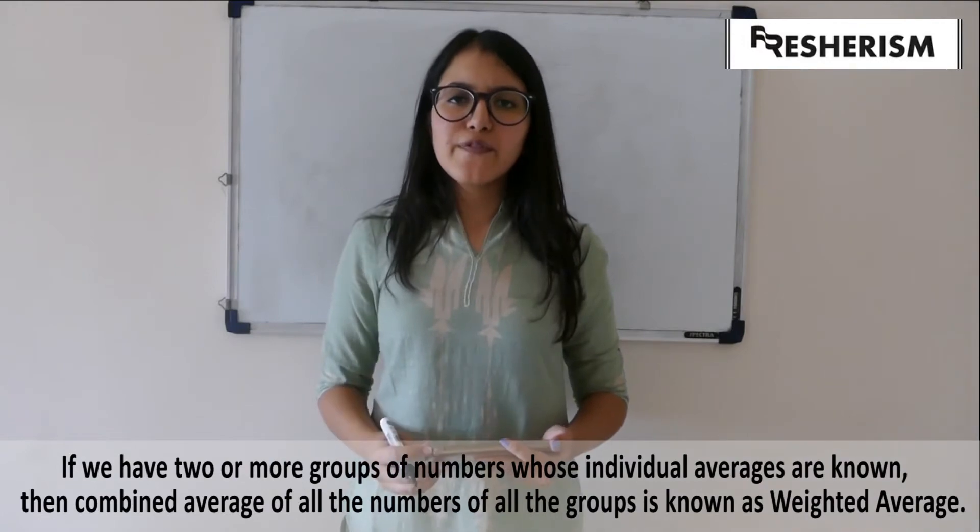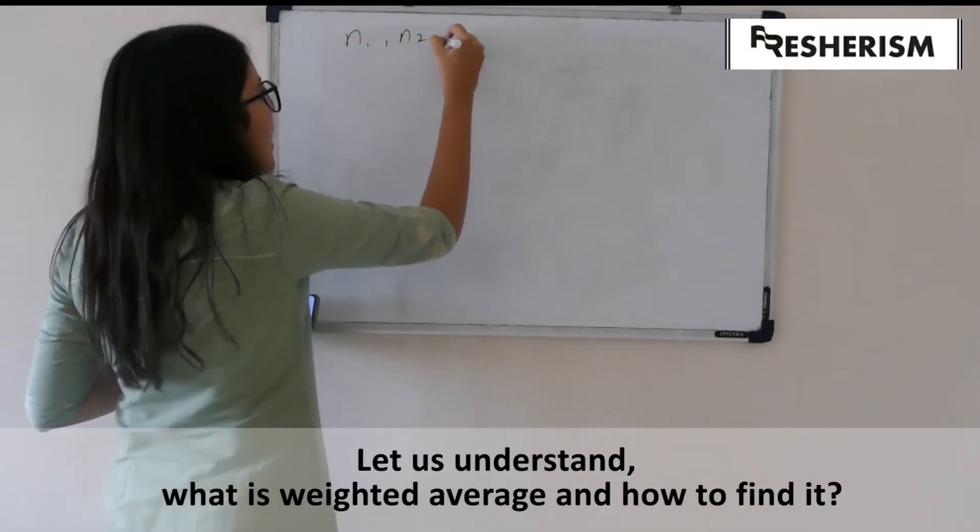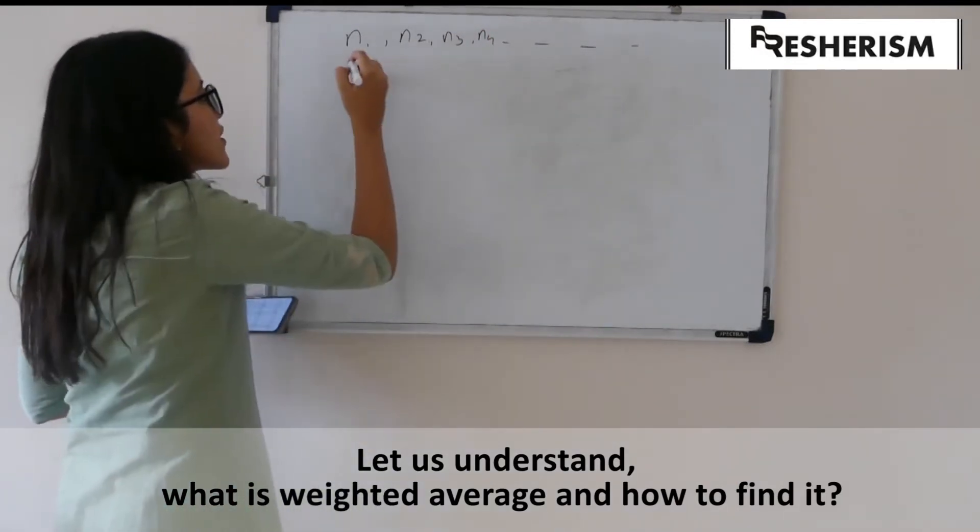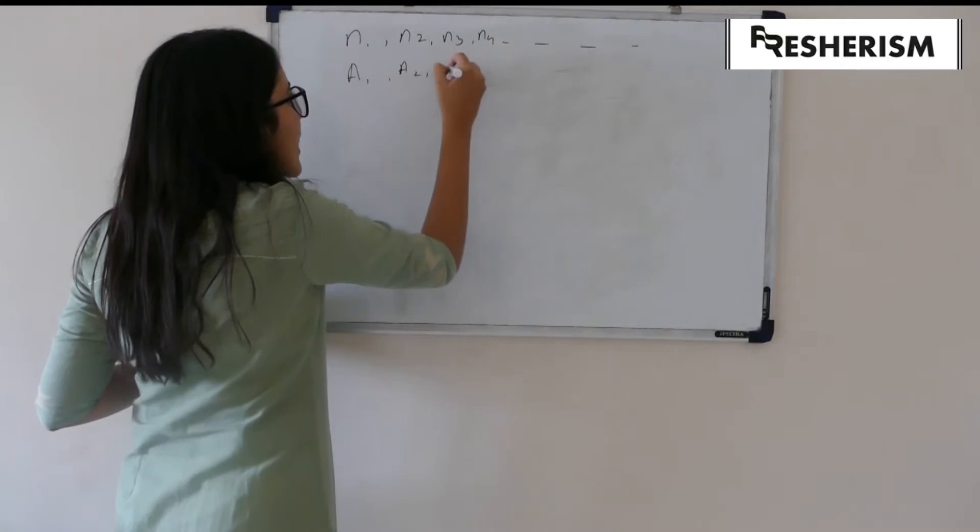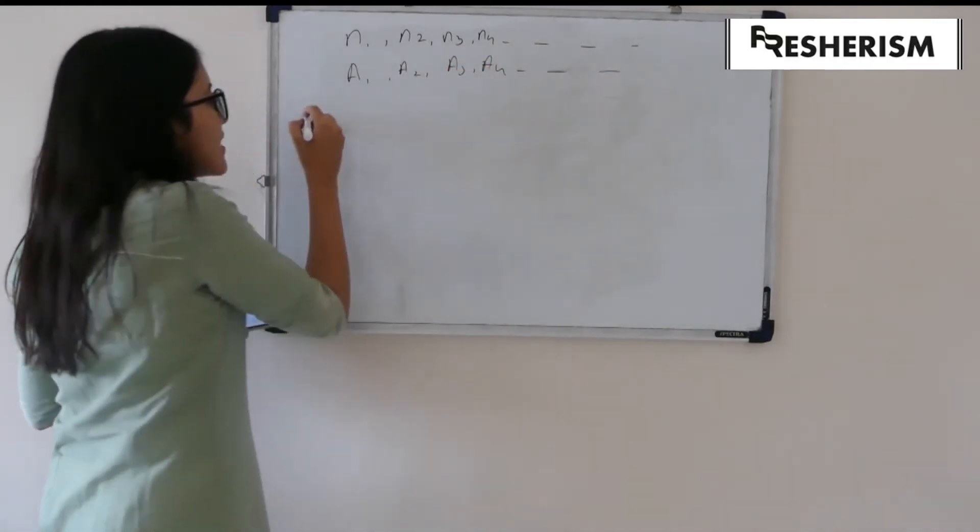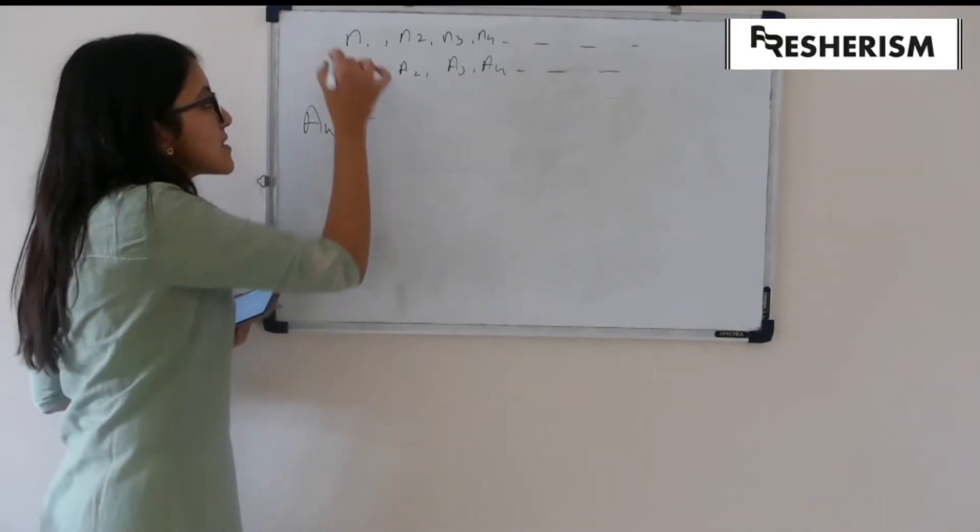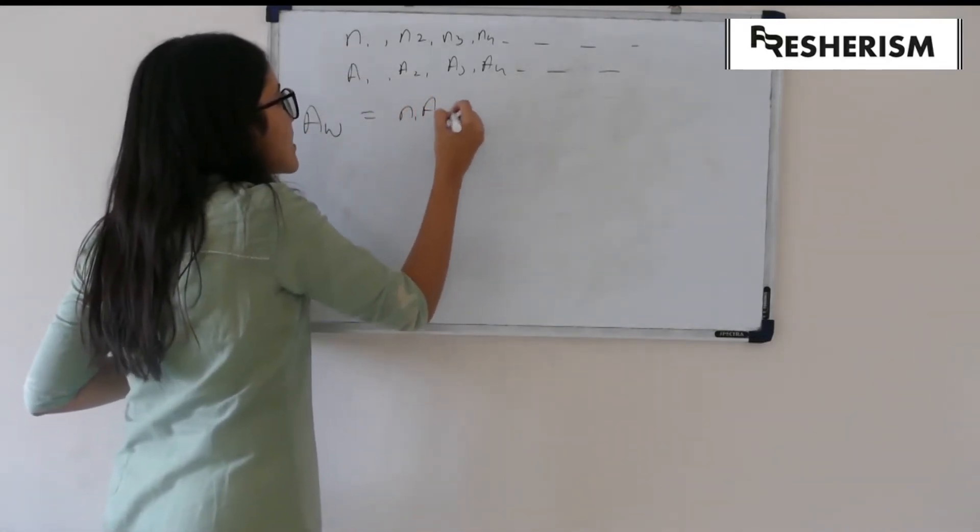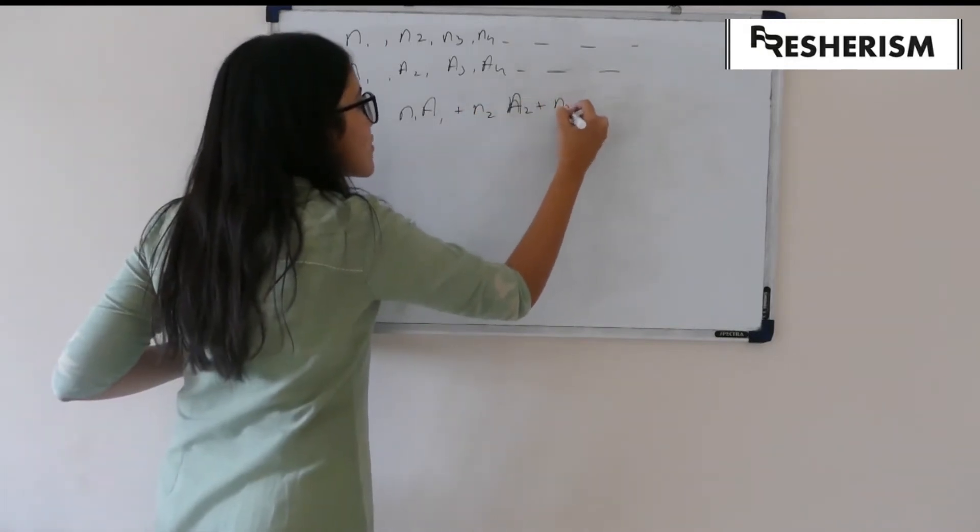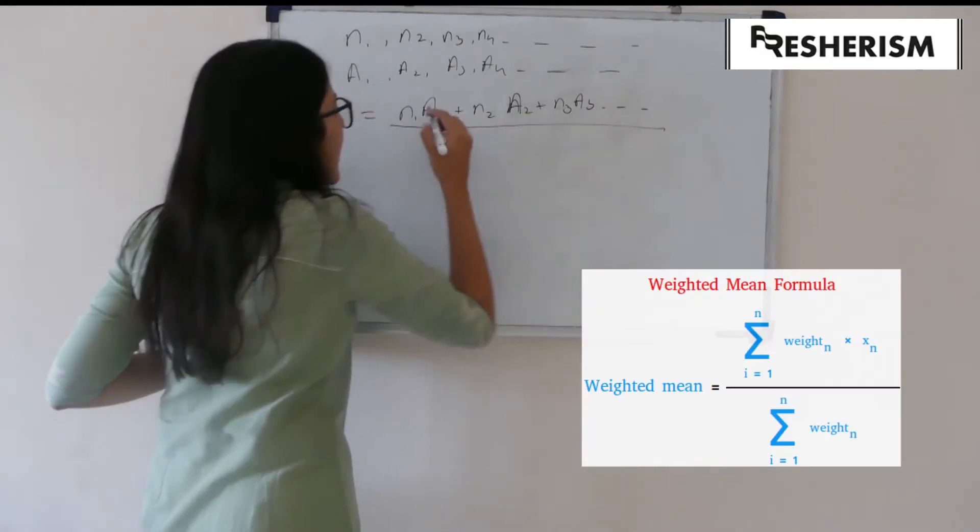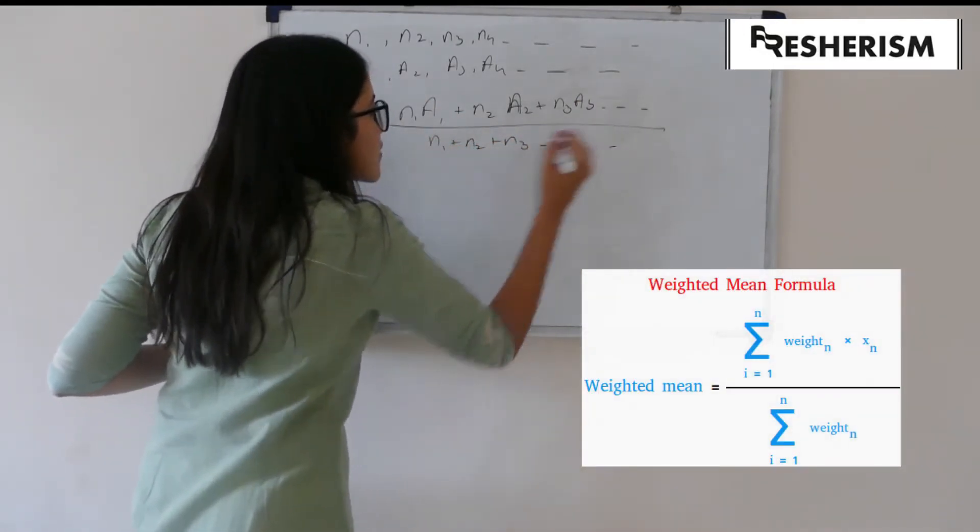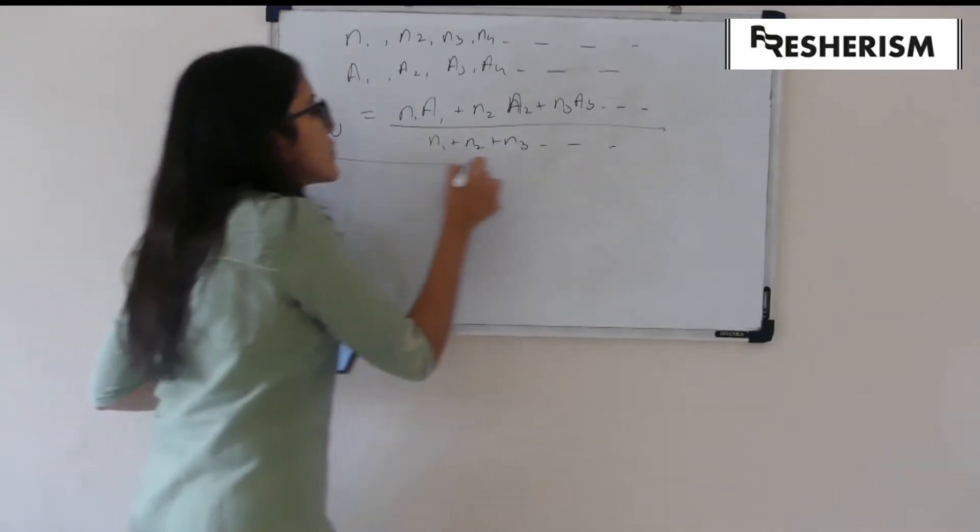If say N1, N2, N3, N4 and so on have the average of A1, A2, A3, A4 and so on, then the weighted average of this data will be N1 A1 plus N2 A2 plus N3 A3 and so on, divided by N1 plus N2 plus N3 and so on. This is the formula for Weighted Average.